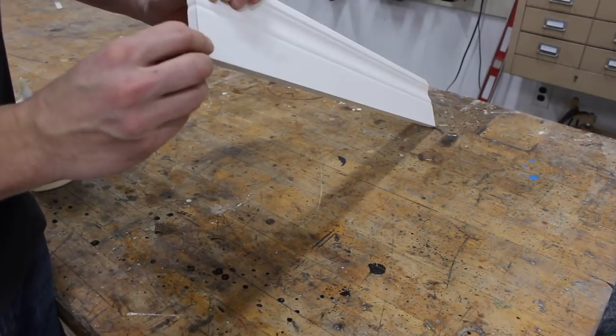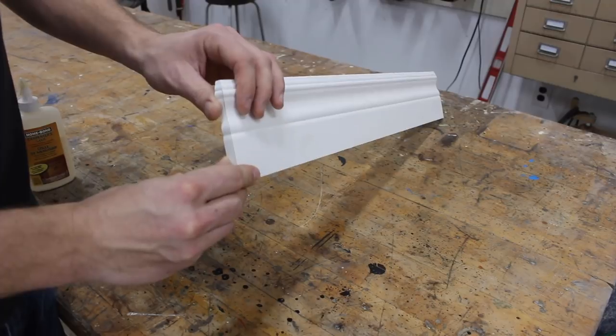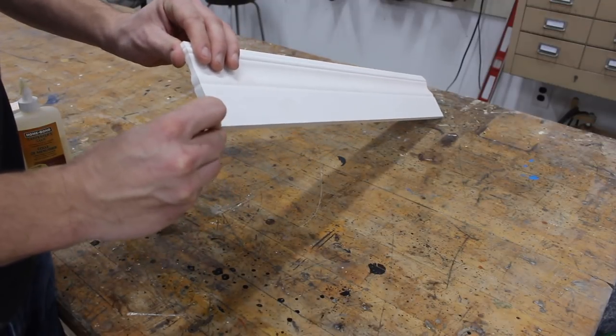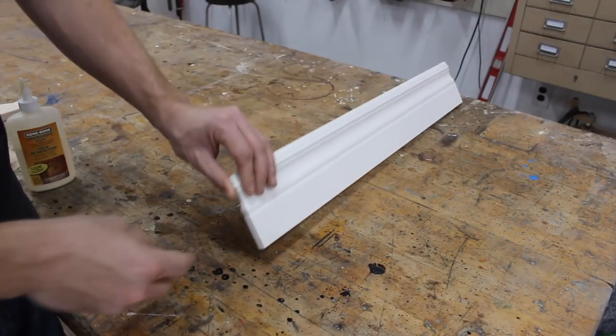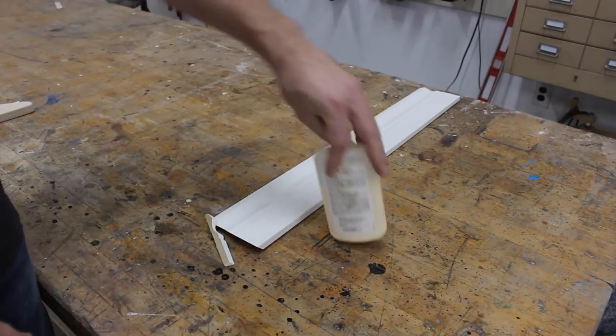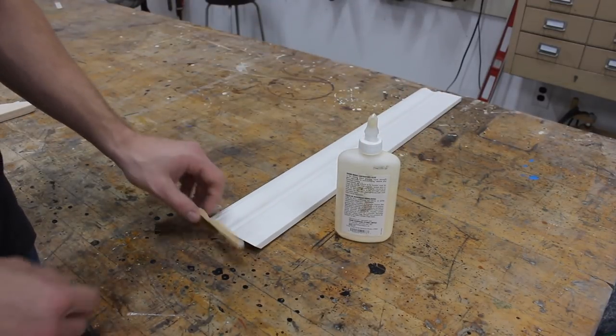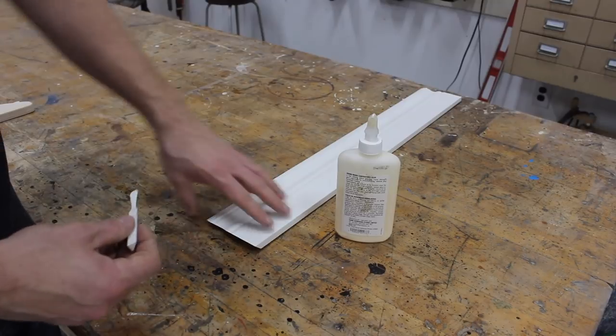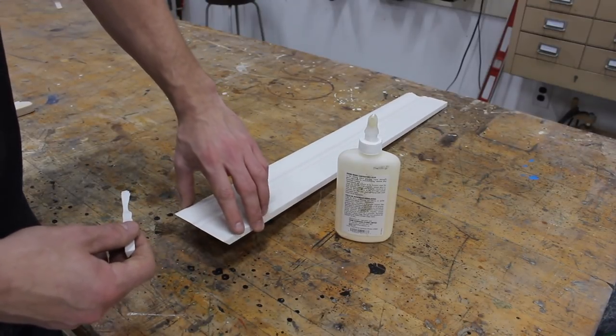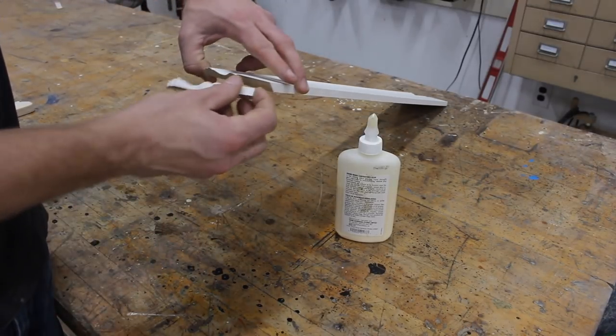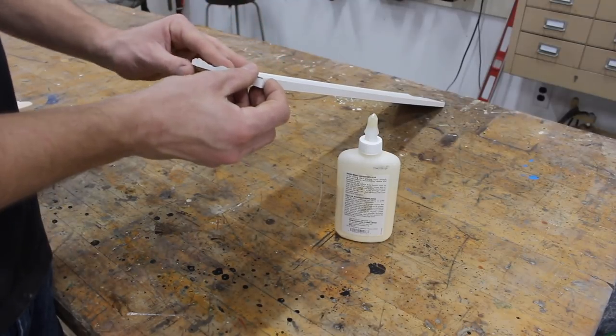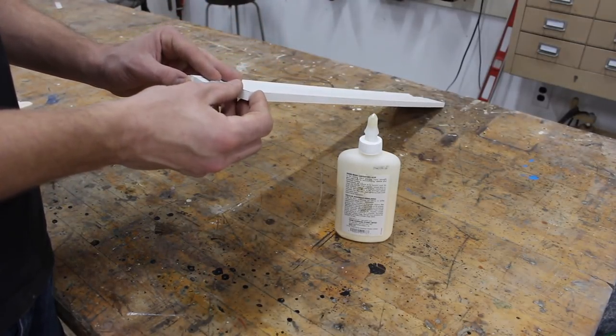I usually like to use what they call miter bond, but I am currently out of miter bond, so I'm just going to use some carpenter's glue. I read from the comments on my baseboard video that some guys said contact cement works well for this too, but I also don't have any of that, so I'm just going to use some wood glue.